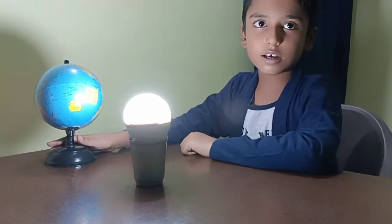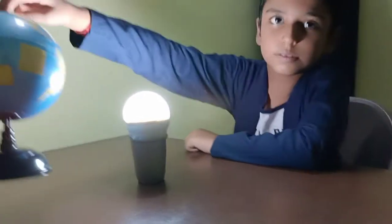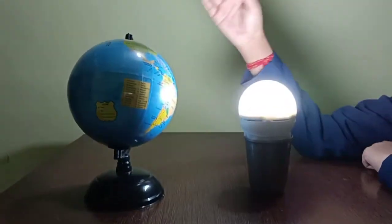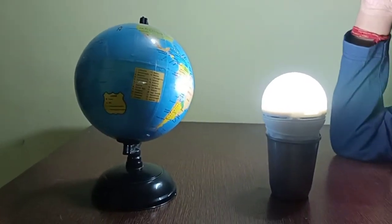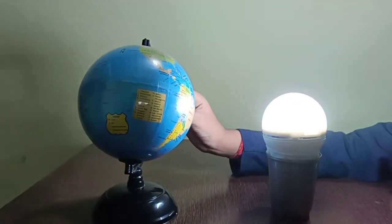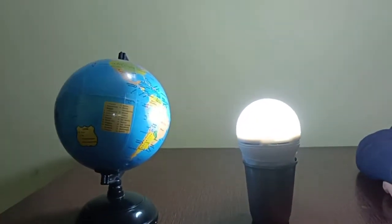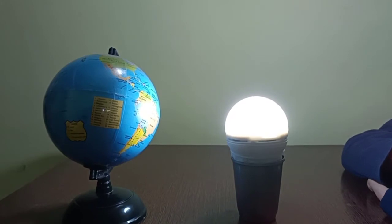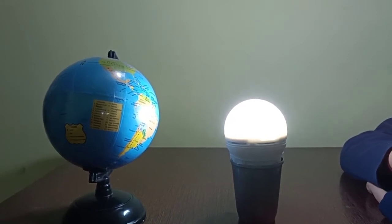When the earth is in this position, it means March. The day and night are equal. Sun rays are directly hitting the equator. Northern hemisphere has spring season and the southern hemisphere has autumn season.